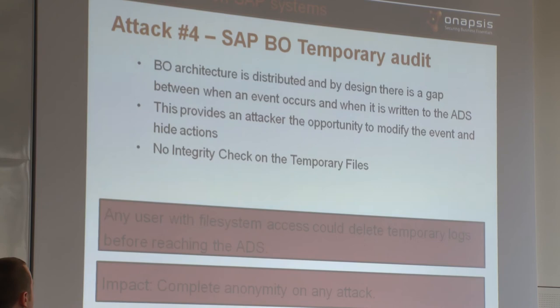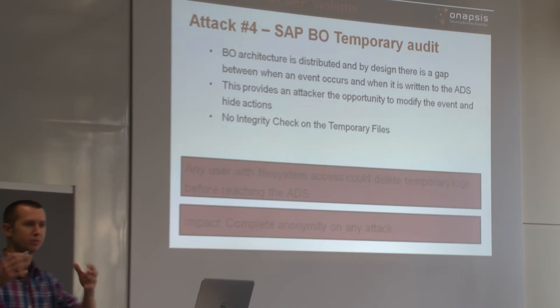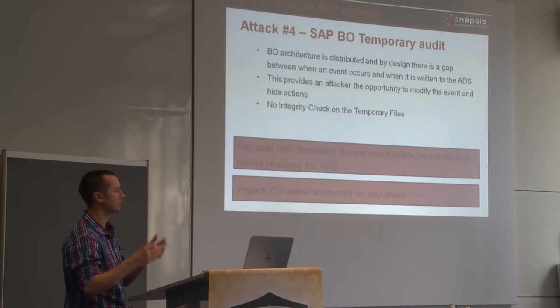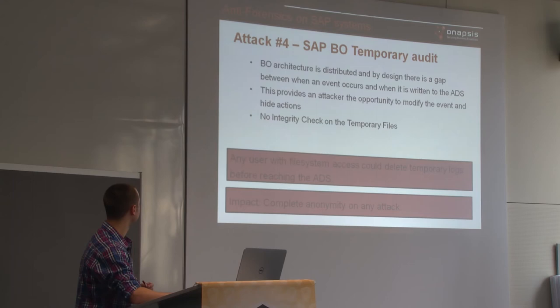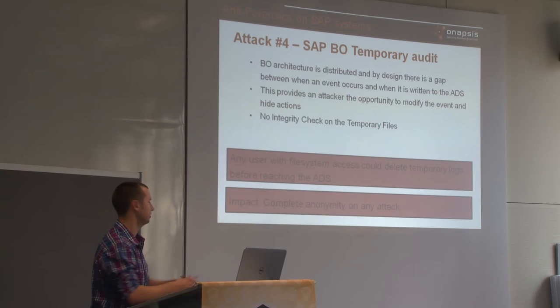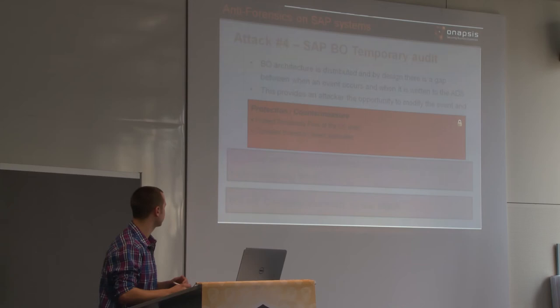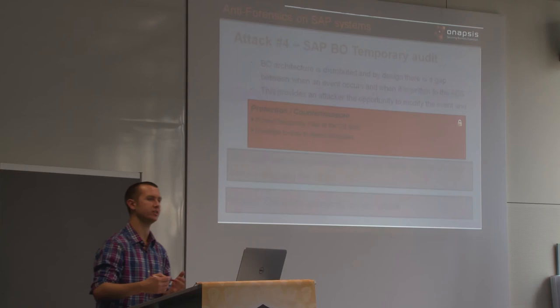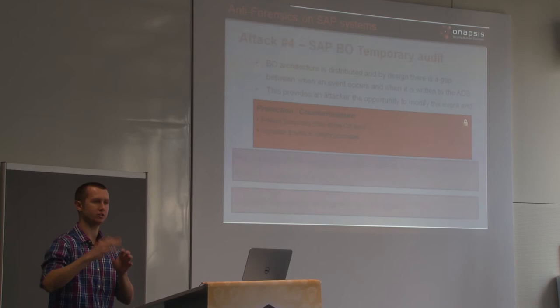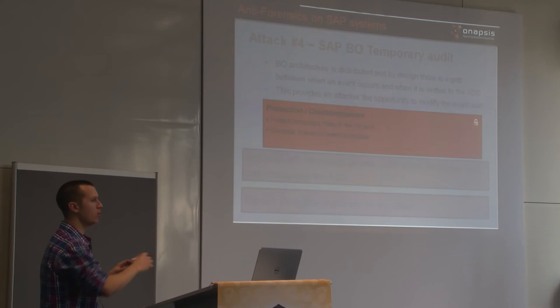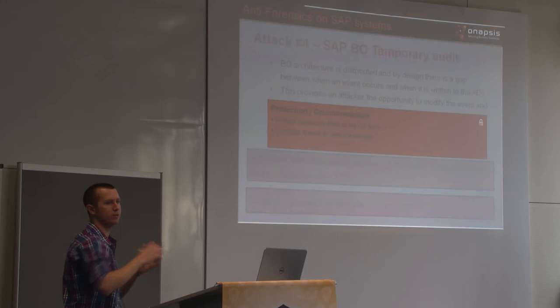In summary: due to Business Objects' distributed architecture, the time delay creates an opportunity for an attacker to modify or delete events. There is no integrity check on the temporary files. The impact is that any user with file system access to an auditee could delete the temporary logs. Countermeasures include protecting the temporary files — you don't want someone compromising the auditee at the file system level — and correlating events. Since the attacker must act quickly, there may be gaps, such as changing the login but forgetting to change the logout or report generation events, which timeline correlation could highlight.